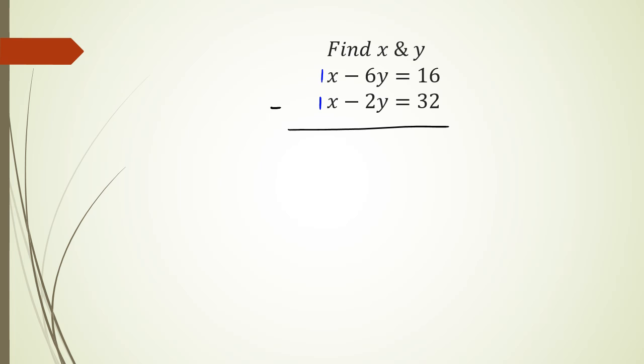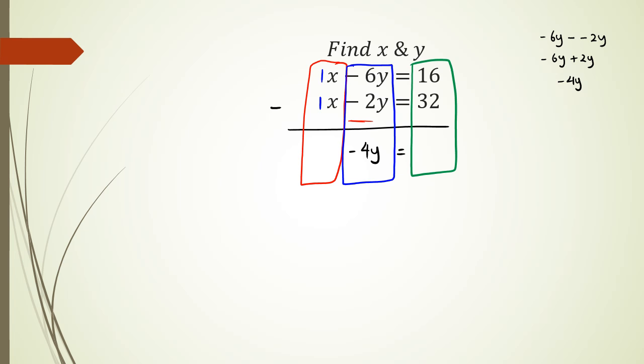With subtracting, just be careful with the negative in front and the negative here with 2y. First up, I'm going to do 1x minus 1x. 1x minus 1x is 0, so I don't need to worry about it. Next I have negative 6y minus negative 2y, so it's going to be negative 6y plus 2y, which equals negative 4y. And finally, I've got to do 16 minus 32, which equals negative 16.